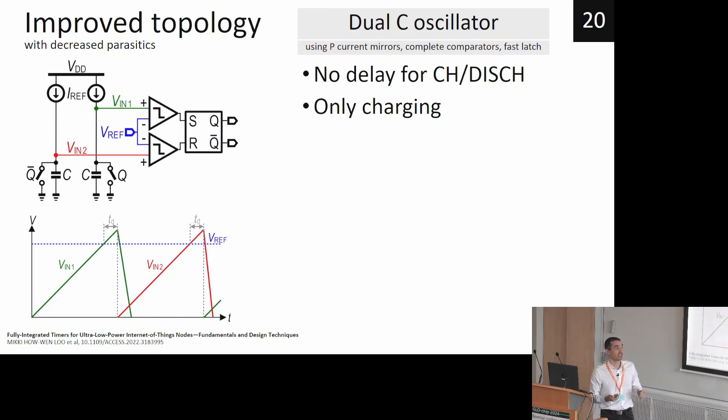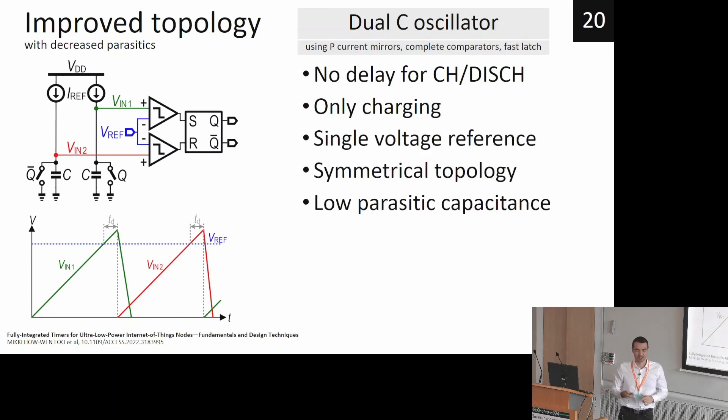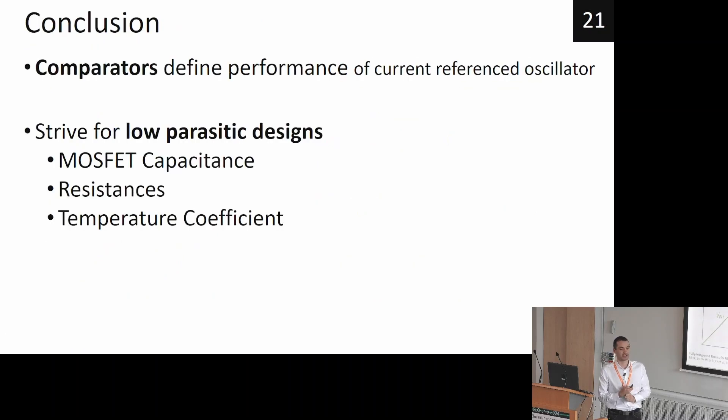This design also simplifies the amount of stray capacitance on the reference nodes and has also many other advantages such as single voltage reference is only needed. Single voltage reference. It's symmetrical and has low parasitic capacitance, but still we have a problem that it requires a good comparator. So we should strive in our designs for low parasitics by taking into account MOSFET capacitances, resistances, and also temperature coefficient.